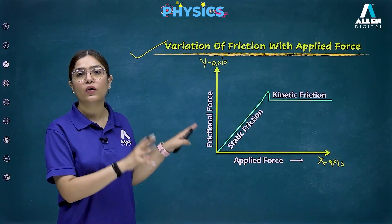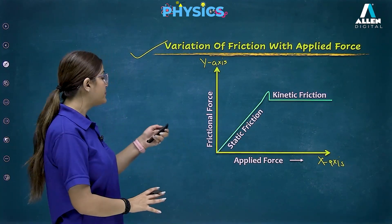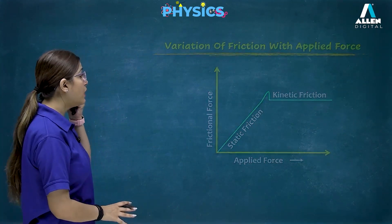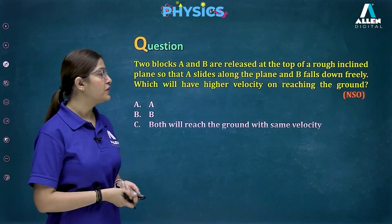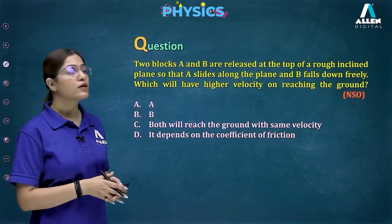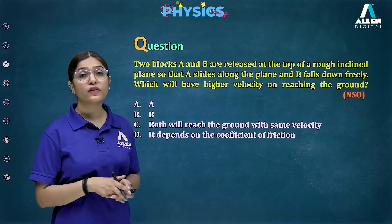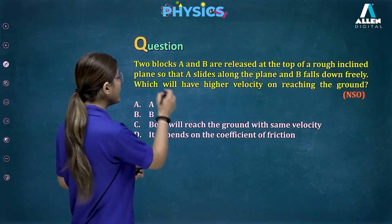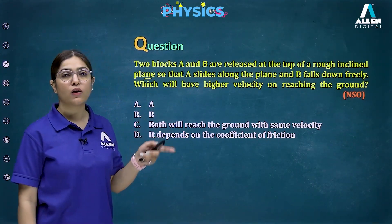Now let's solve some questions. The first question: two blocks A and B are released at the top of a rough inclined plane, so that A slides along the plane and B falls down freely.